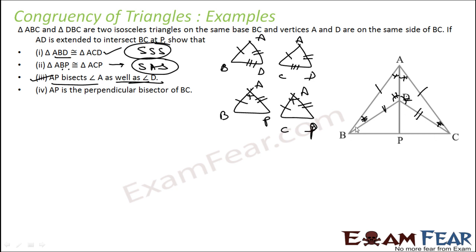This angle is nothing but 180 minus this angle, and this angle is nothing but 180 minus this angle. So these angles are also equal, and these two sides are equal, so this angle is also equal. You can prove it that way.